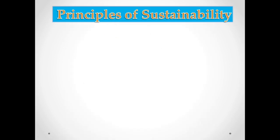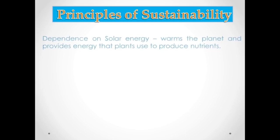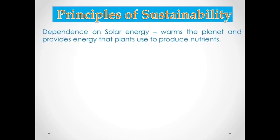First, we're going to talk about the dependence on solar energy. The sun inputs solar energy to warm the planet and provides energy that plants use to produce nutrients. This is what we call photosynthesis — the food-producing process of plants in order for them to grow, survive, and reproduce.